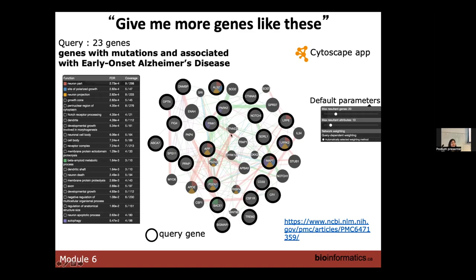Now that you have this network, your goal is to find genes important in early onset Alzheimer's disease. You started with a core of 23 genes, but you may also retrieve other important genes. When you apply functional enrichment to this network — shown on the left — you see the pathway enrichment for those genes, and it shows a relation to neuron function. This gives you reassurance that these genes work together in some brain function, and you can further analyze them.